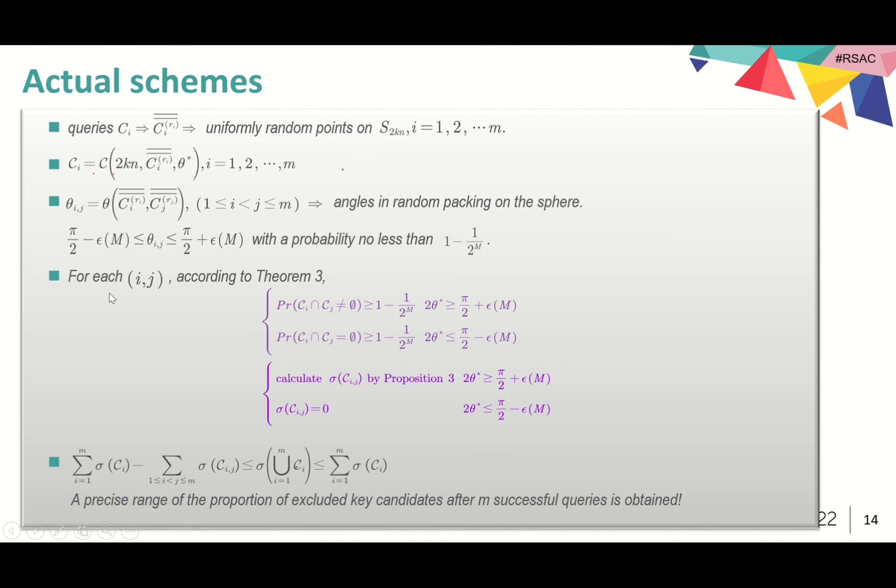Then, we can use Theorem 3 to measure the range of theta_{ij}. That is, the probability that the difference between theta_{ij} and pi divided by 2 is less than epsilon_m is at least 1 minus 1 over 2^m.